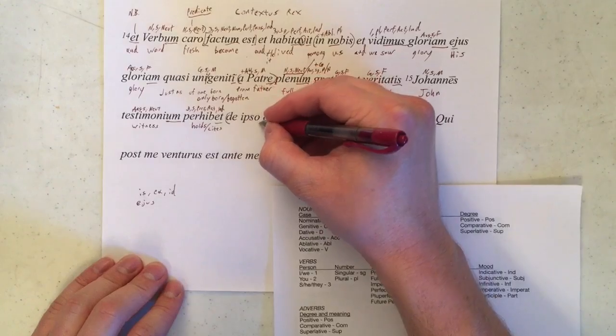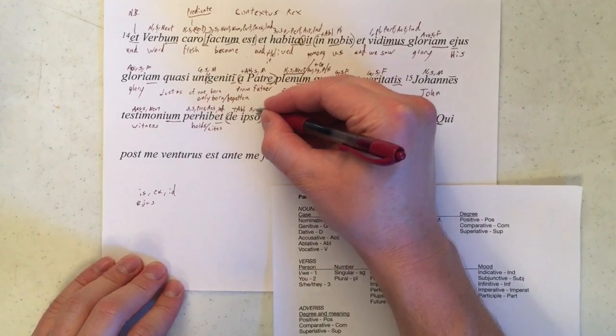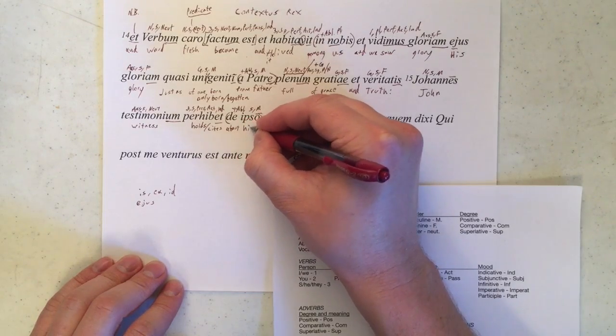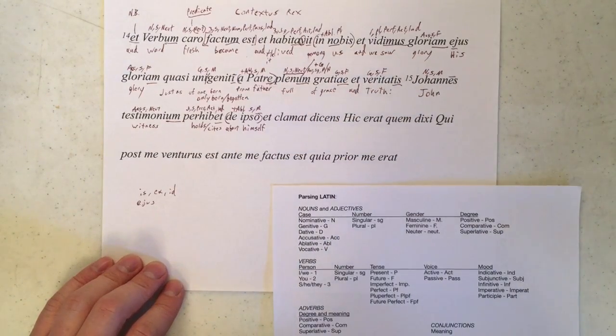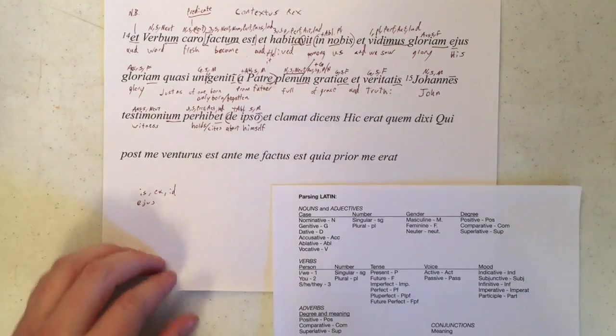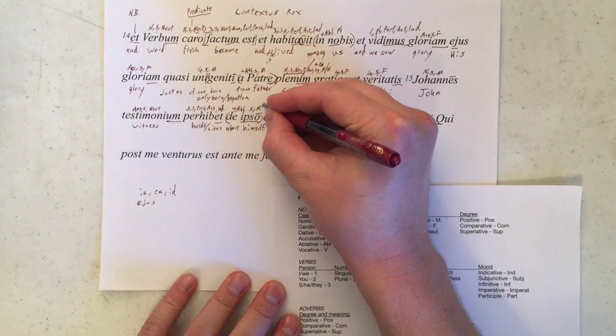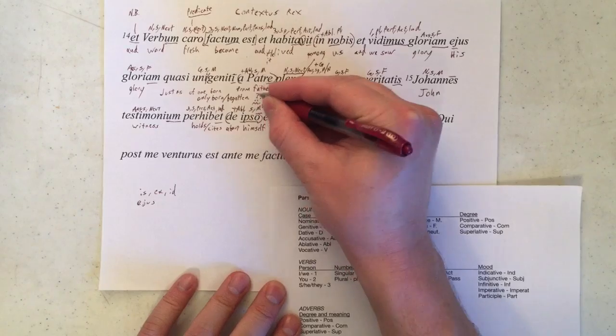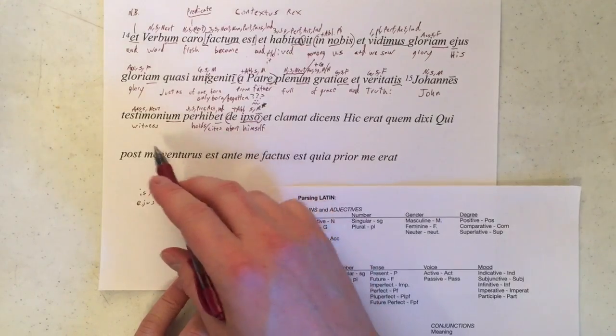Now we've got a prepositional phrase. De, ipso. De takes the ablative. Ipso is clearly ablative, singular, masculine, and it means himself. Been paying attention to the Greek video, you'll spot a problem immediately right there, but that's for the comparison video ways down the road, but maybe underline this one, star it, put a confused face over it, so you don't forget it.